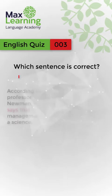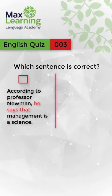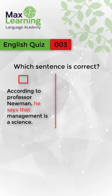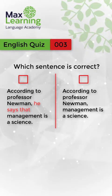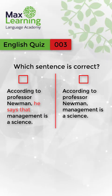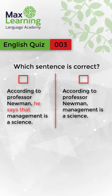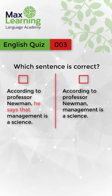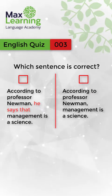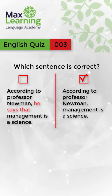Which sentence is correct? Option A: According to Professor Newman, he says that management is a science. Option B: According to Professor Newman, management is a science. I'll give you some time to think. The correct answer is: According to Professor Newman, management is a science.